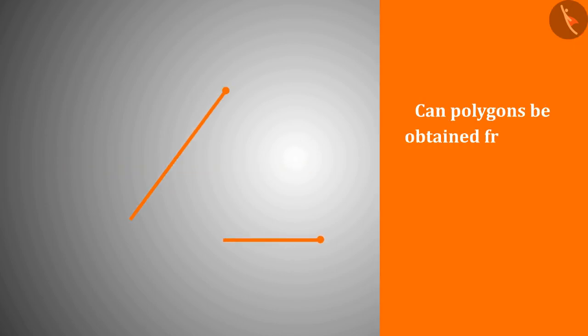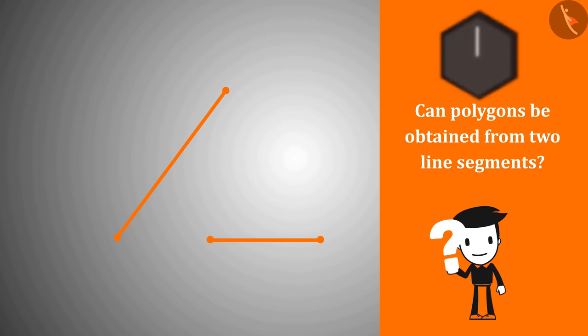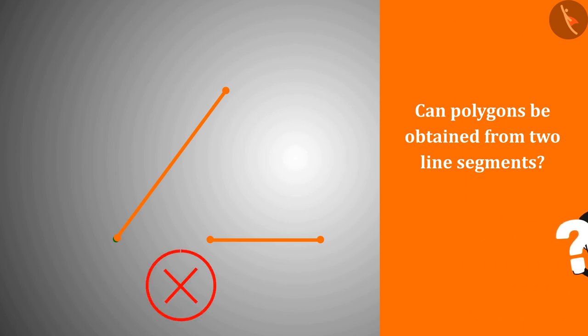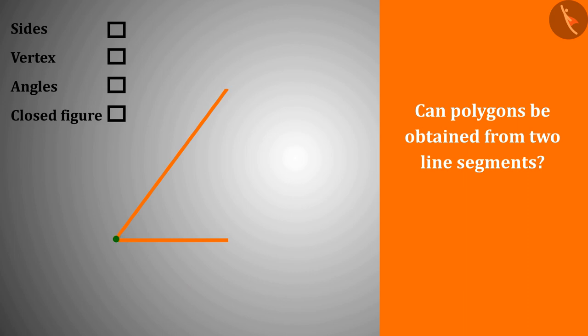Can polygons be obtained from two line segments? No, because by joining two line segments we get two sides, one vertex, and one angle, but this shape is not closed, due to which it is not a polygon.